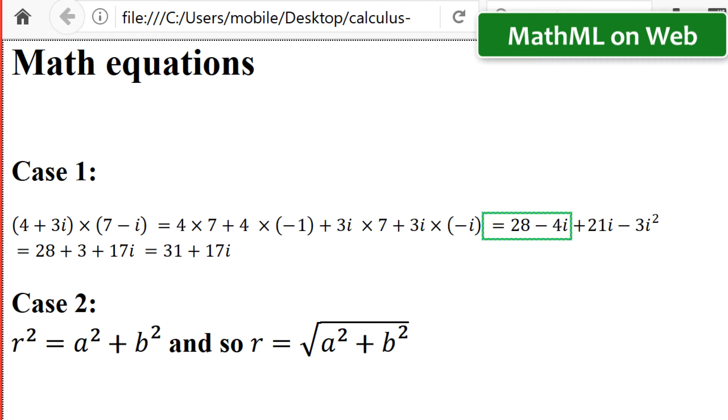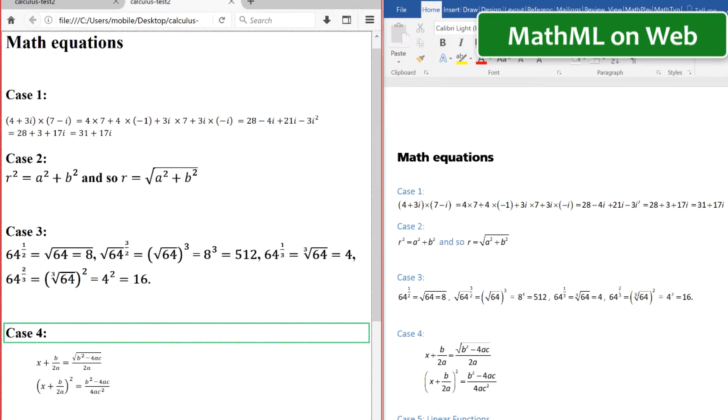Equals 28 minus 4i plus 21i minus 3i squared equals 28 plus 3 plus 17i equals 31 plus 17i. But I just wanted to show you how this is rendered by the MathML and how it's read by the screen reader.